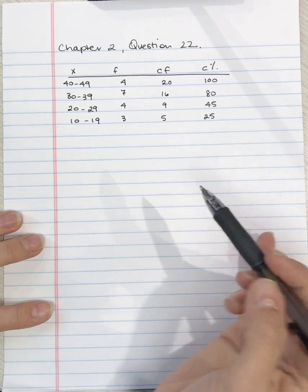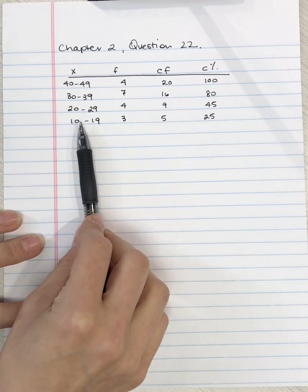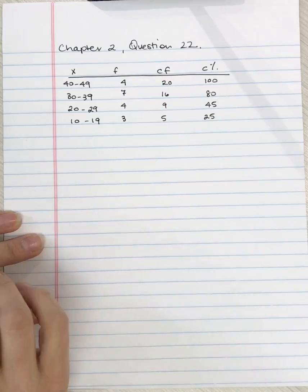Looking here, we can see this is a grouped frequency distribution by looking at this X column.